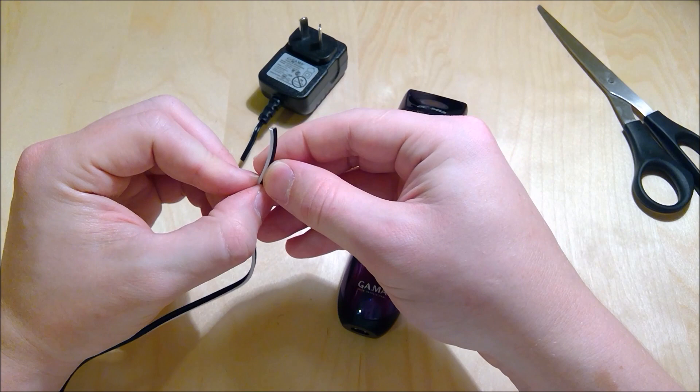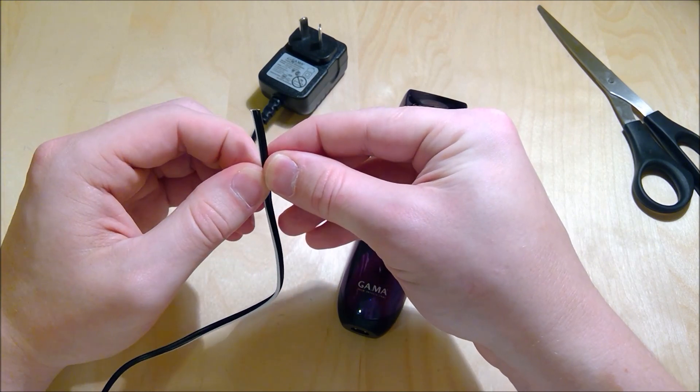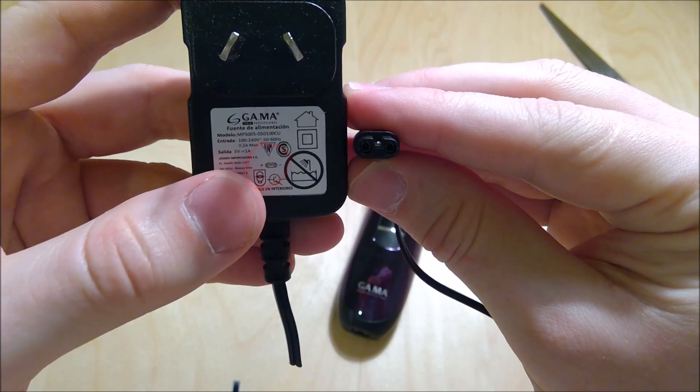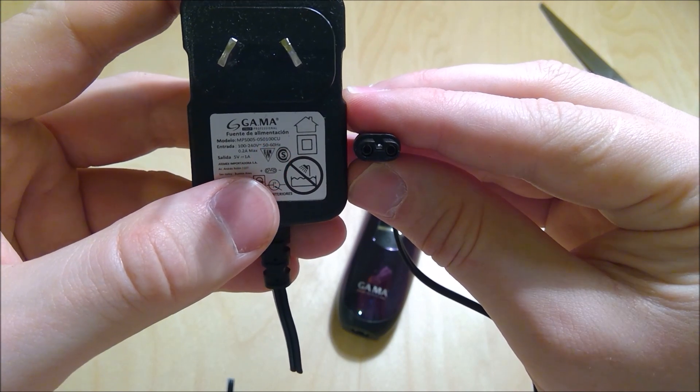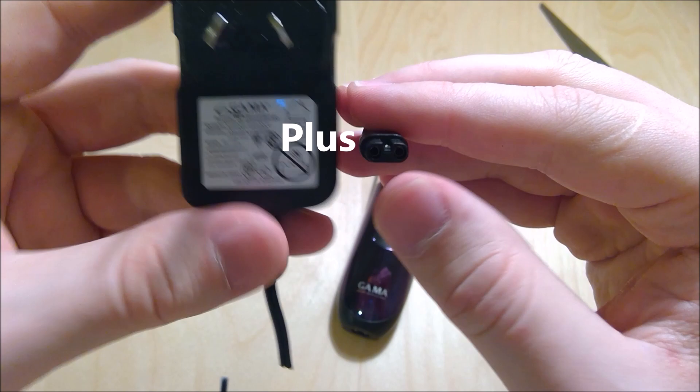As you can see here, one of the sides of the wire has a white stripe on it and the other one is straight black. So we need to figure out which one is negative and which is positive. As you look here, there is this picture that shows that the left side on this thing is plus and the right side is minus.